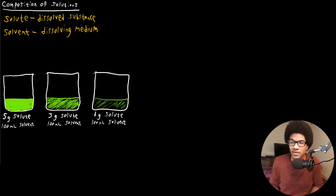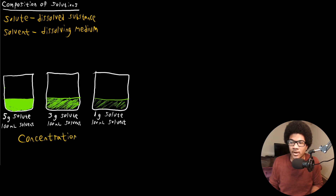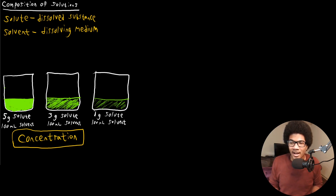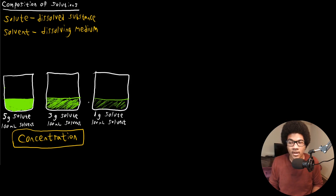I drew three examples here to illustrate that. The first example is if you had five grams of solute in a hundred milliliters of solvent — you would have a very intense color, a very concentrated solution. The second one is three grams of solute in a hundred grams of solvent — less of an intense color. And the last one is one gram of solute in a hundred grams of solvent, giving a very faint green color. Each solution has a different concentration because there are different amounts of solute present.